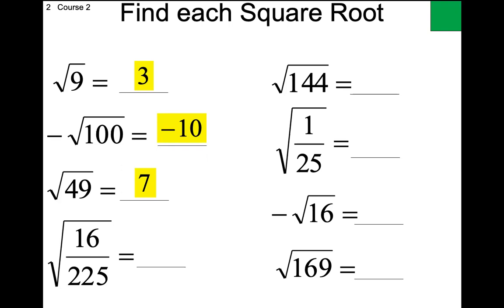Most of us don't have it memorized yet, so we look at Box 1. 225 — oh, it's 15, so the answer is four-fifteenths. Very good.